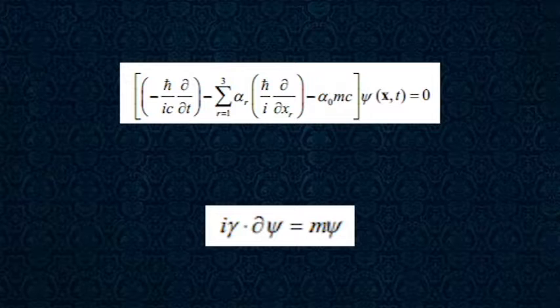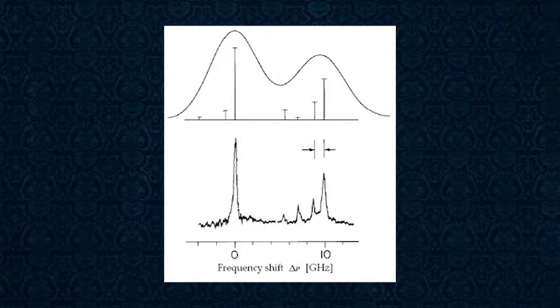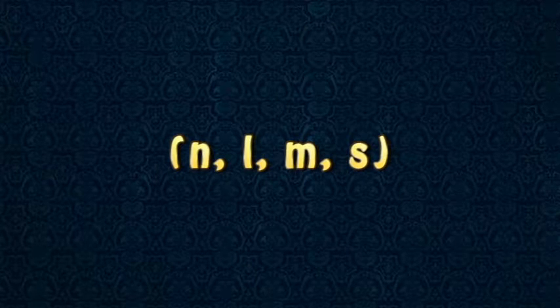Using these equations, one can precisely describe the hydrogen atom's known fine structure frequency spectrum of light, as well as acquire the four quantum numbers describing each electron in an atom.